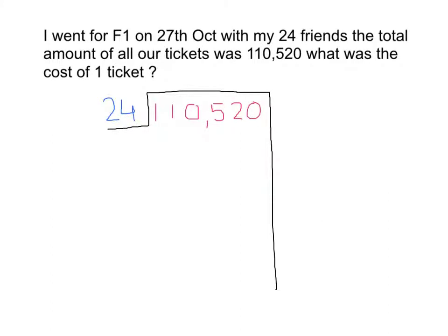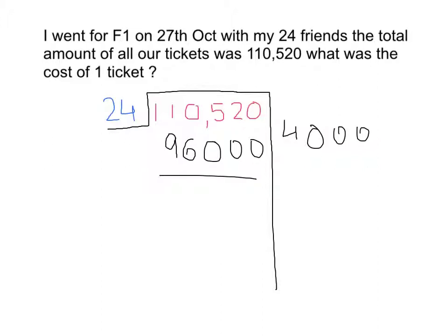Now, for partial quotient, I will divide 1,10,520 by 24. First, I will go with 4, so 24 fours are 96 — add zeros to get 96,000. And then I am left with 6.